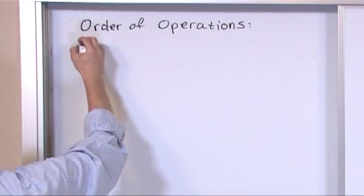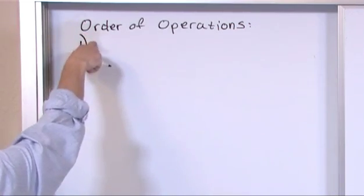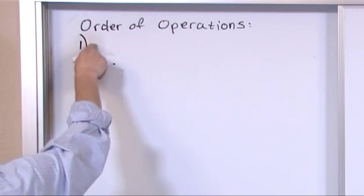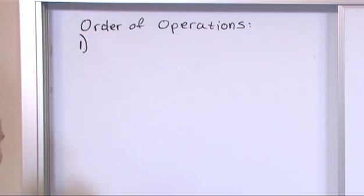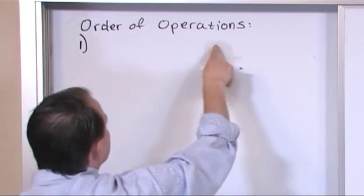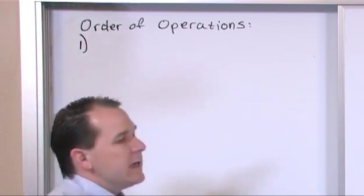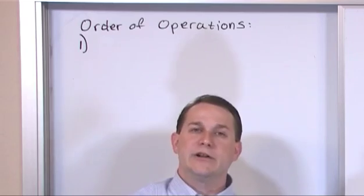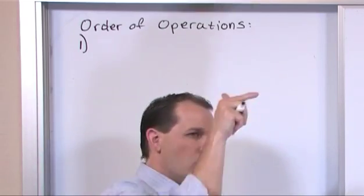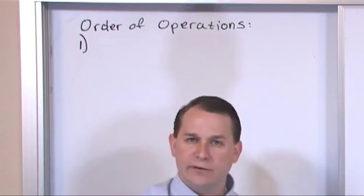So the order of operations, number one, this list is going to go from, I should say, do first to do last. So the very first thing on our list here is going to be, if you see this in your expression to simplify, then you have to go and do that first. And you work down through your list, doing them in this order.